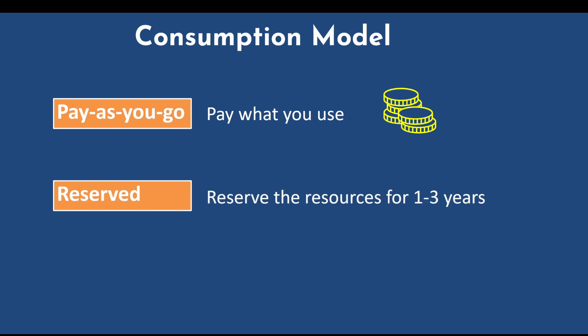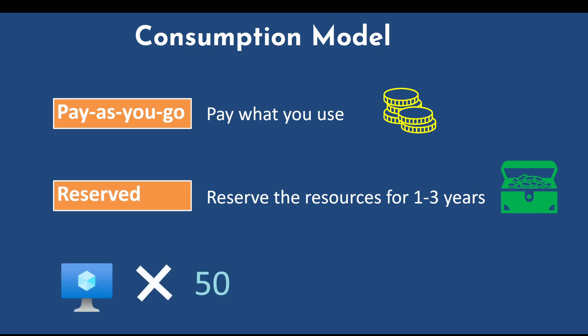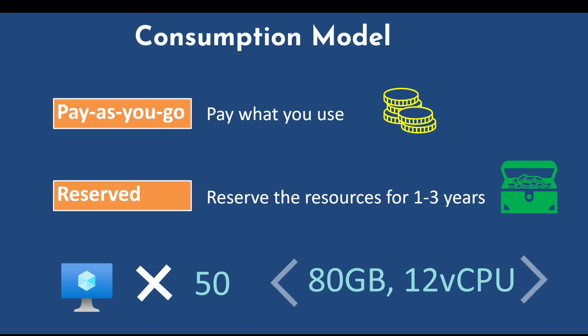Azure also provides an option for reserved capacity, where you commit to using a certain number of resources for a specific period of time — usually one to three years — and you receive a huge discount on that commitment. For example, you might say: I need 50 virtual machines for the next three years with 80 GB boot disk and 12 virtual CPUs. This is the reserved model, where you decide the cost in advance and get a significant discount.